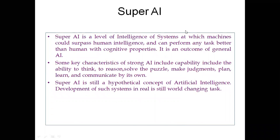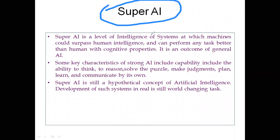Coming to Super AI: Super AI is the level of intelligence of a system at which a machine could surpass human intelligence and perform any task better than us with cognitive properties.